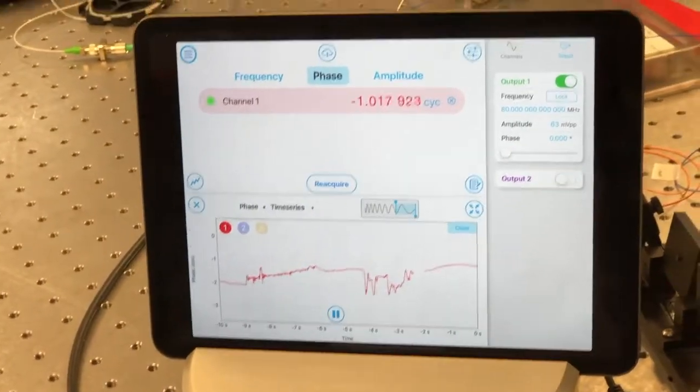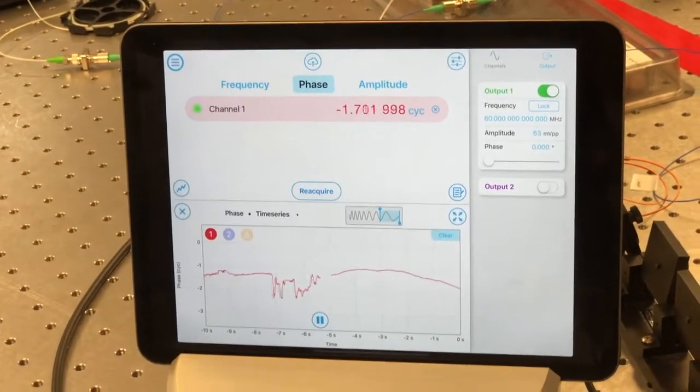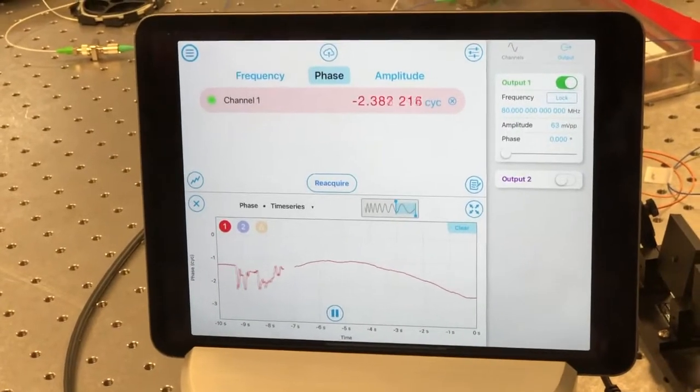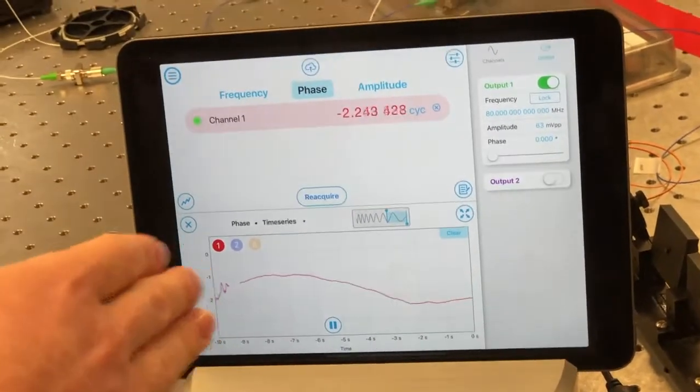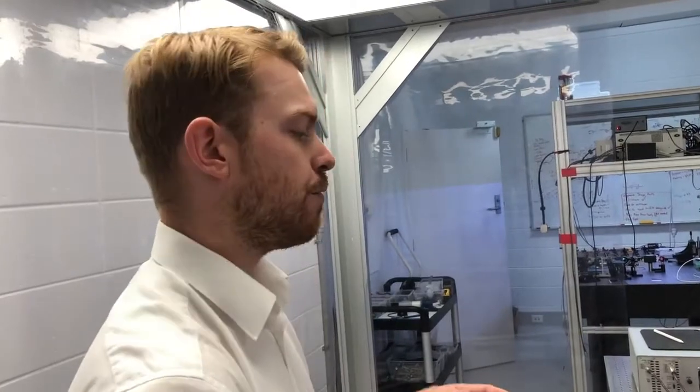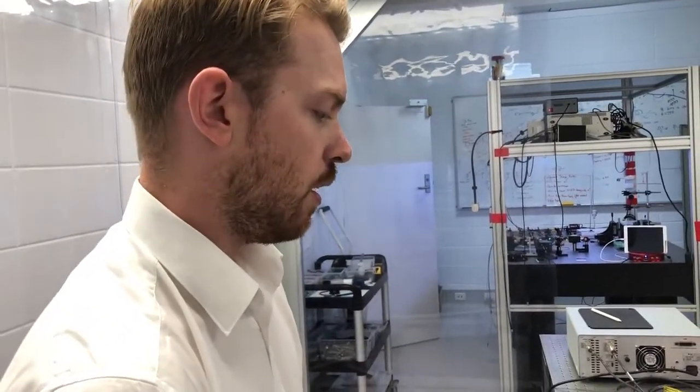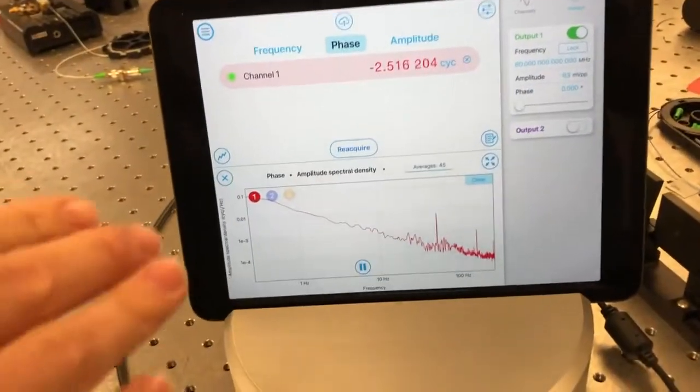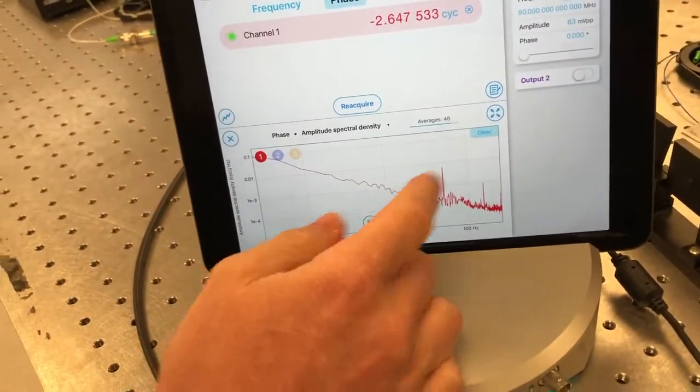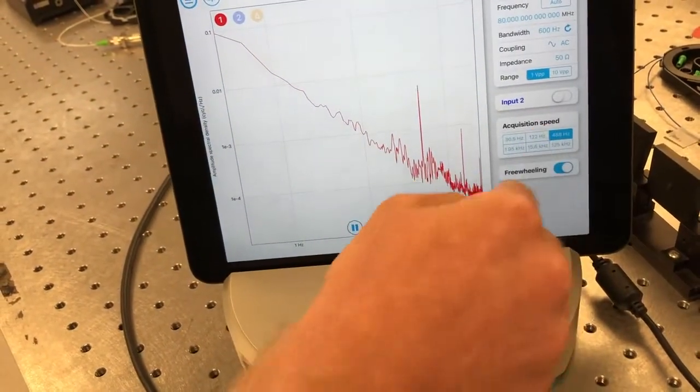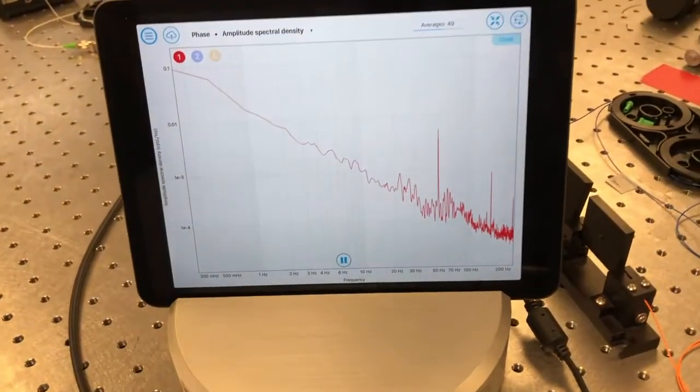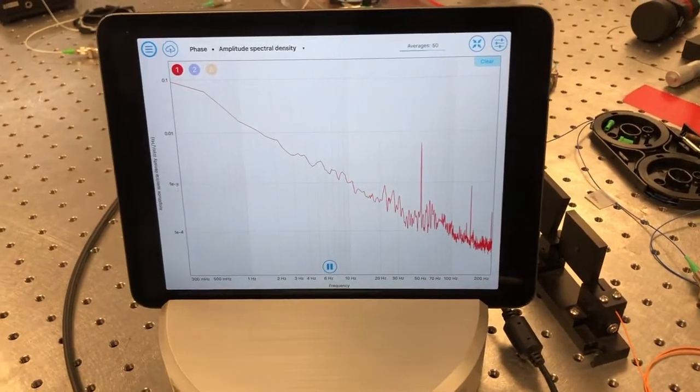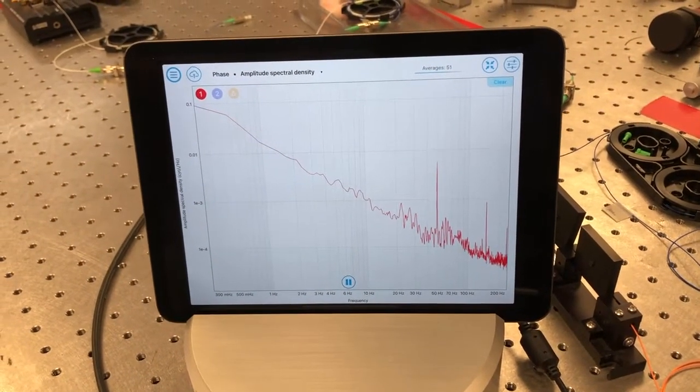A heterodyne interferometer in this configuration is very sensitive to motion. And what you can imagine is that you might want to use this kind of instrument to essentially detect that motion, or if you're like us, we want to use that phase information and feed it back to stabilize the relative path lengths of the two arms. Because different features that appear in the amplitude spectral density can tell us something about what's going on, or tell us at what frequencies certain sources of noise are occurring at.